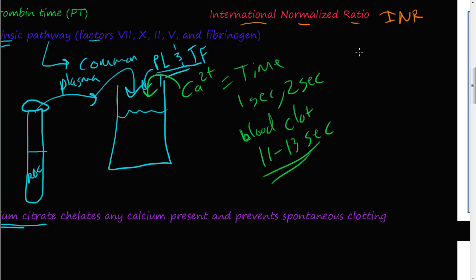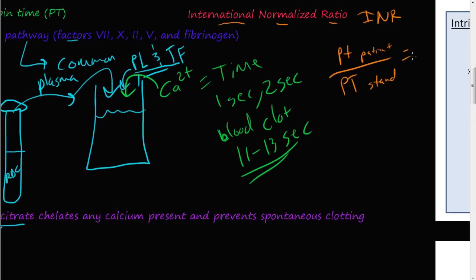They take the PT of the patient and divide it by the prothrombin time of a standard group of patients — their average. This produces a number. For example, if the result is five, then the patient's prothrombin time is five times greater than the standard. An INR of five means the coagulation pathway is really, really slow — indicating increased bleeding risk.